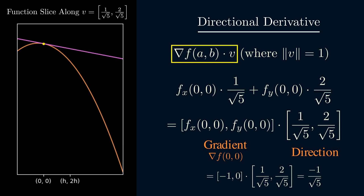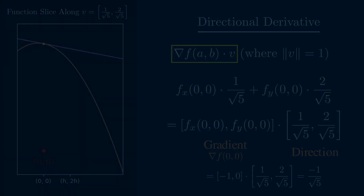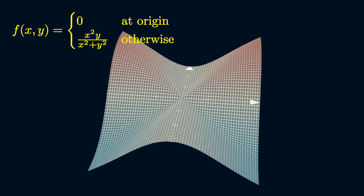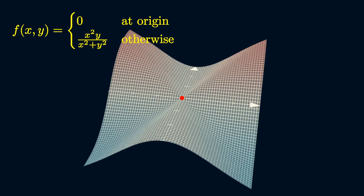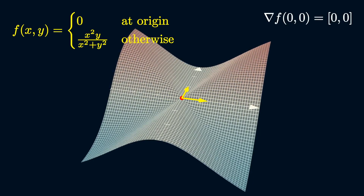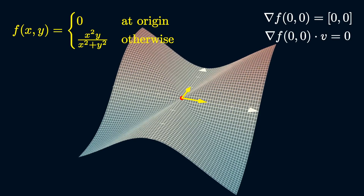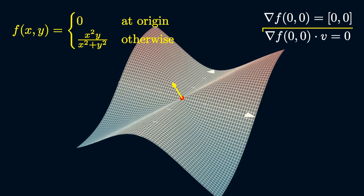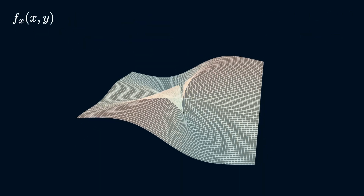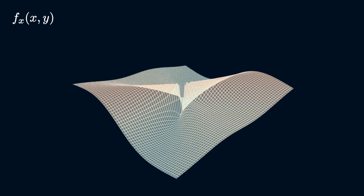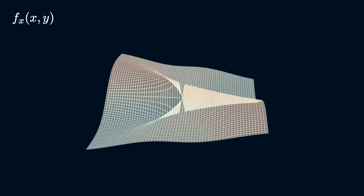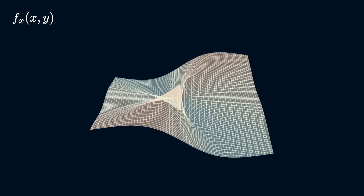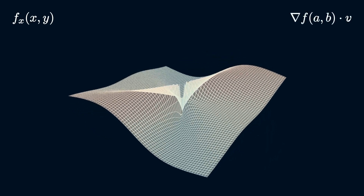Remember this equation only holds when the partial derivatives are continuous. When the partial derivatives are not continuous, we might not be able to use the gradient to calculate the directional derivative. In this example, at the origin both partial derivatives are 0, implying the gradient is 0, and so all directional derivatives should also be 0. But the derivative along this direction is not 0, so the equation isn't holding — because the partial derivatives are not continuous at the origin. This is the graph of the partial derivative with respect to x, and you can see there's a discontinuity at the origin. In practice, you likely won't encounter these functions that much.